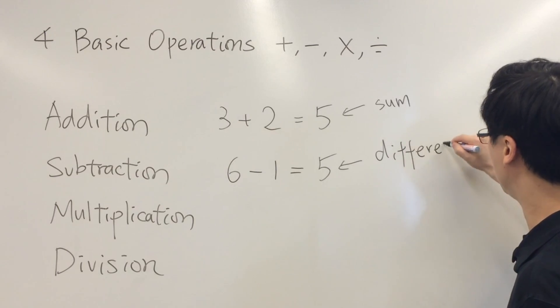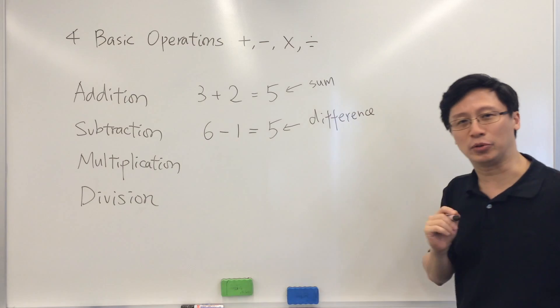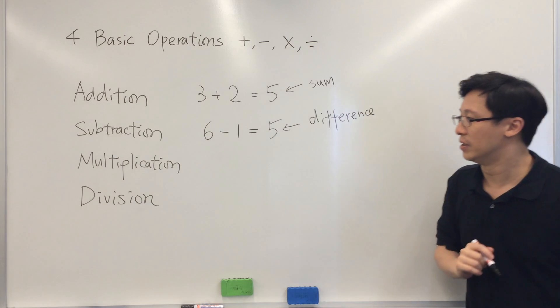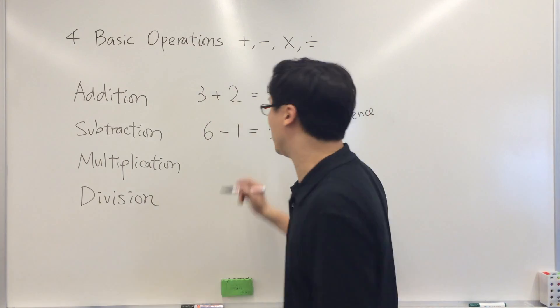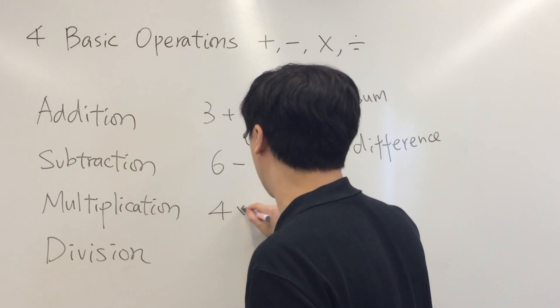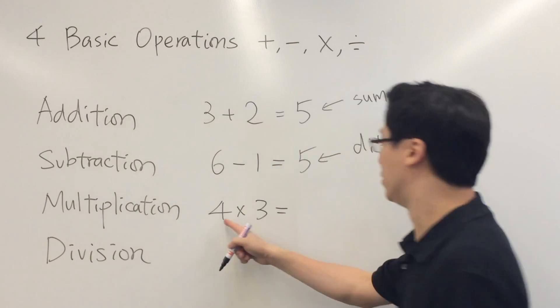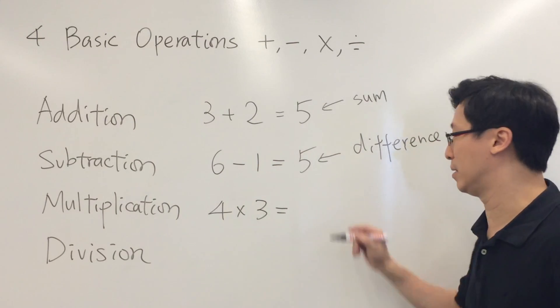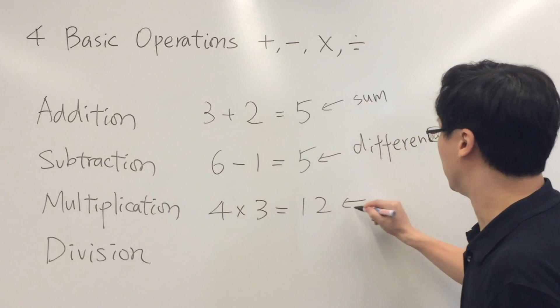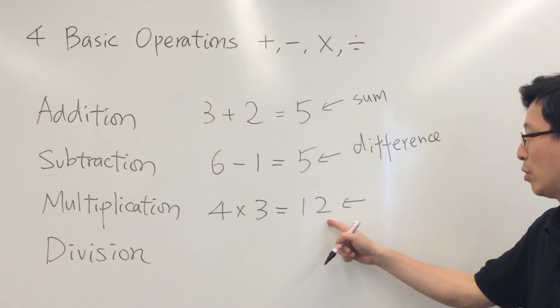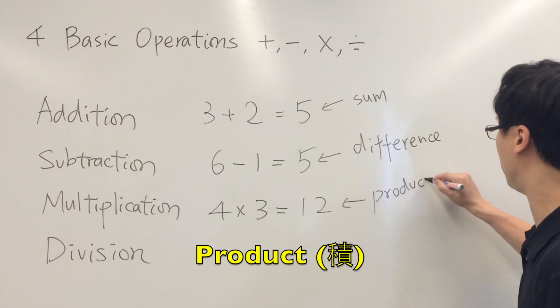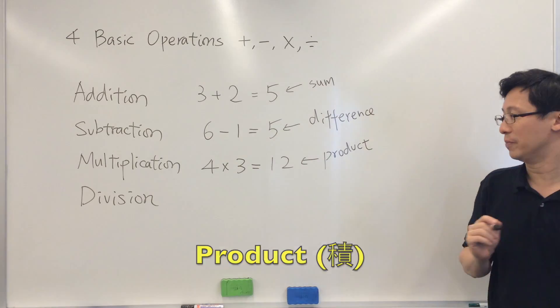For multiplication, let's say we have 4 times 3. 4 times 3 we get 12. We call the number 12 the product of the multiplication.